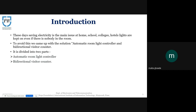We have divided our project into two parts. The first part is the automatic room light controller, which will turn the lights on when someone enters and turn lights off when nobody is present in the room. The second part is the bi-directional visitor counter, which will count the number of visitors and display that count on an LCD screen.